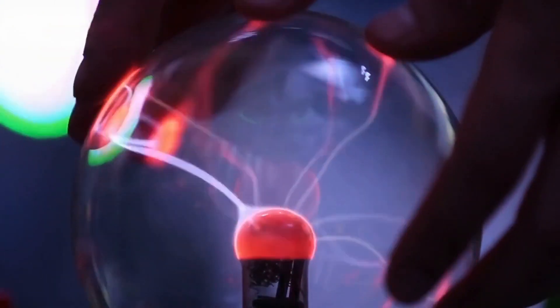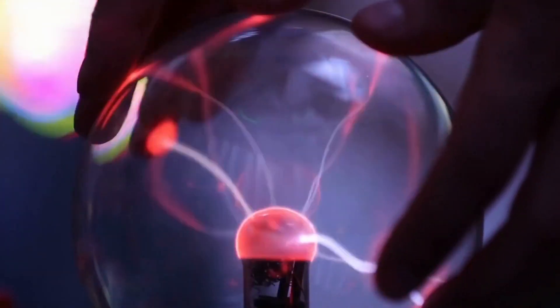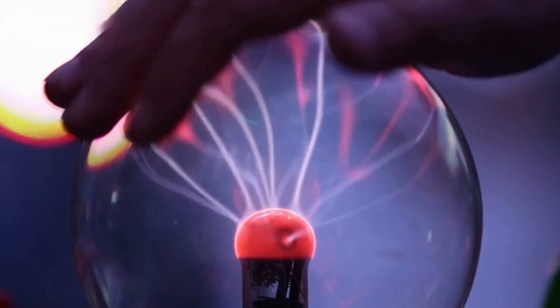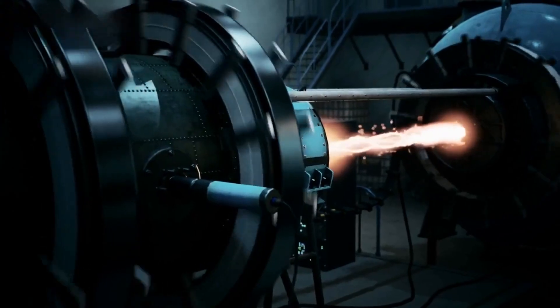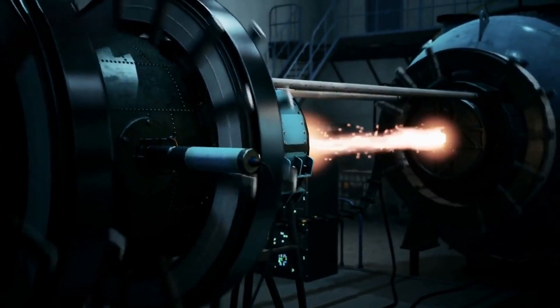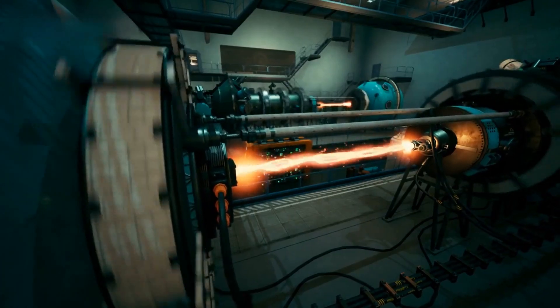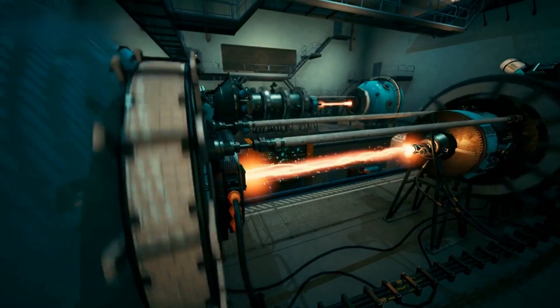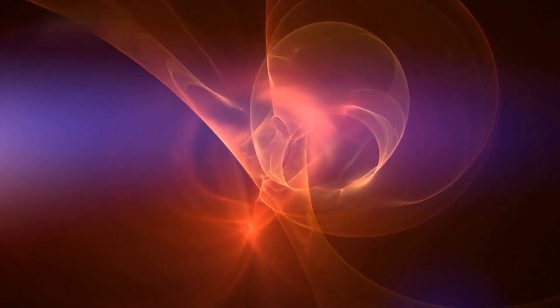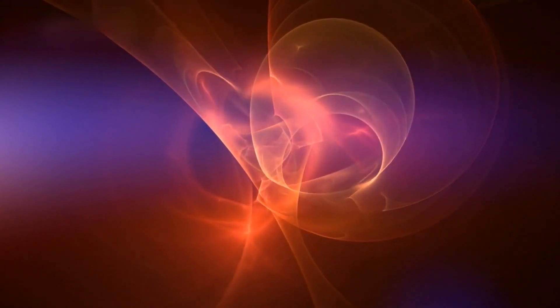This is achieved through the precise utilization of electromagnetic field coils. These coils generate electromagnetic forces that confine and manipulate the plasma, preventing its dispersion and maintaining its integrity within the system. The ability to control the plasma is crucial for ensuring safe and efficient propulsion. As the plasma is accelerated and expelled through the nozzle of the rocket, it propels the spacecraft forward.